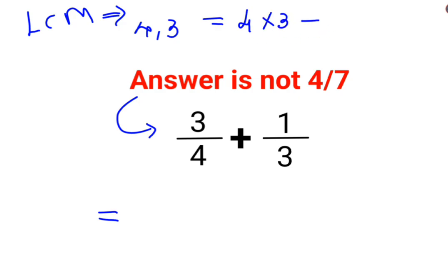Now, in order to make the denominator of this 4 as 12, I need to multiply this by 3, and here I need to multiply this by 4. Please understand, in mathematics, whenever you do some operation in the denominator, the same operation has to get carried in the numerator as well.